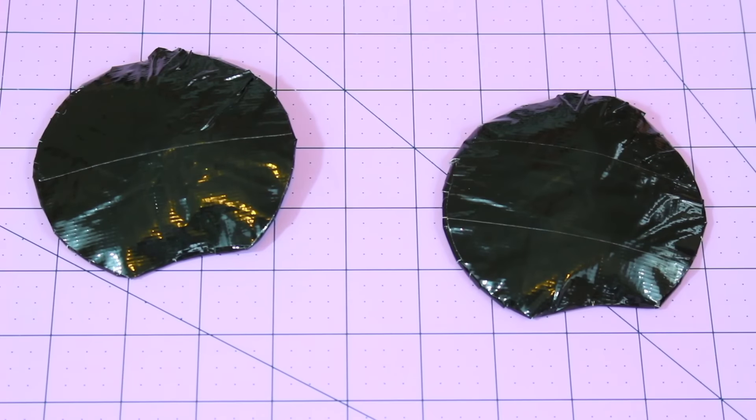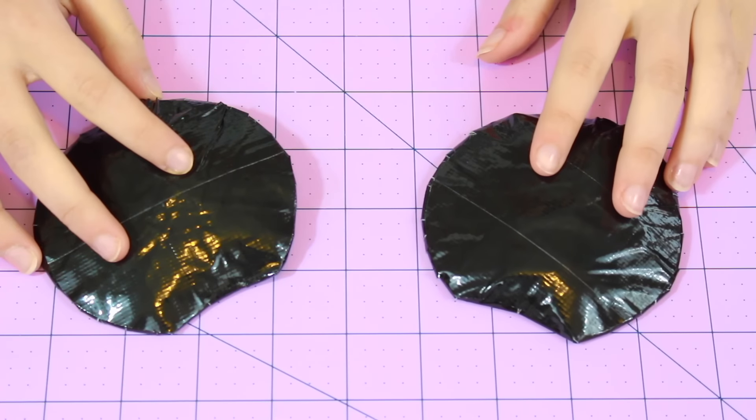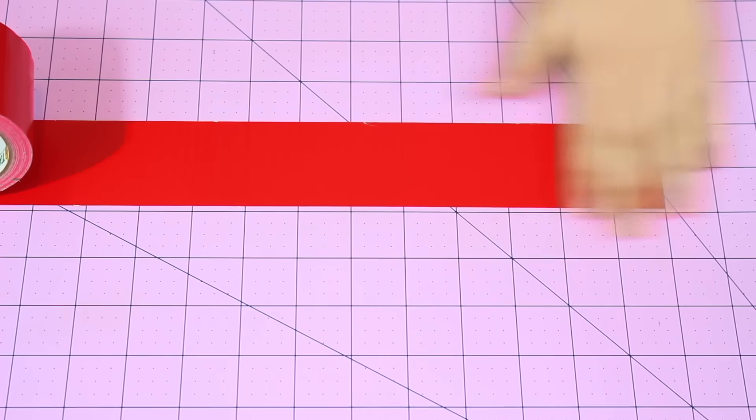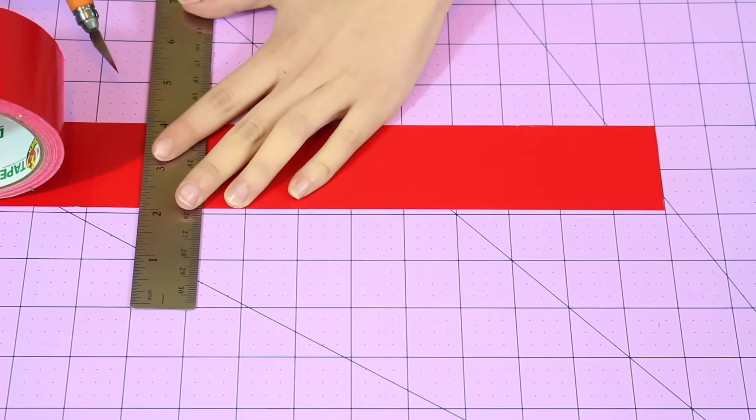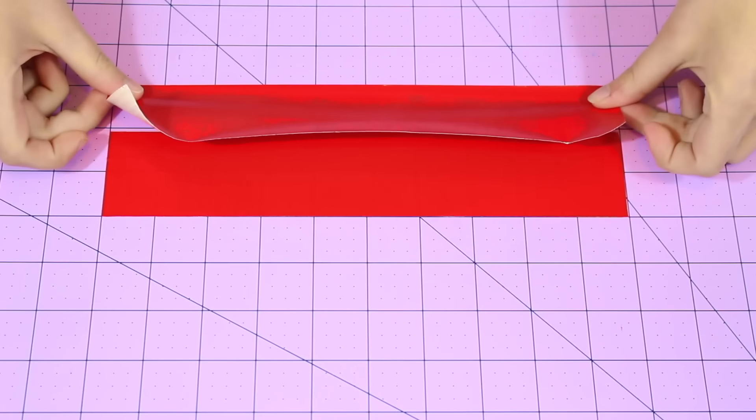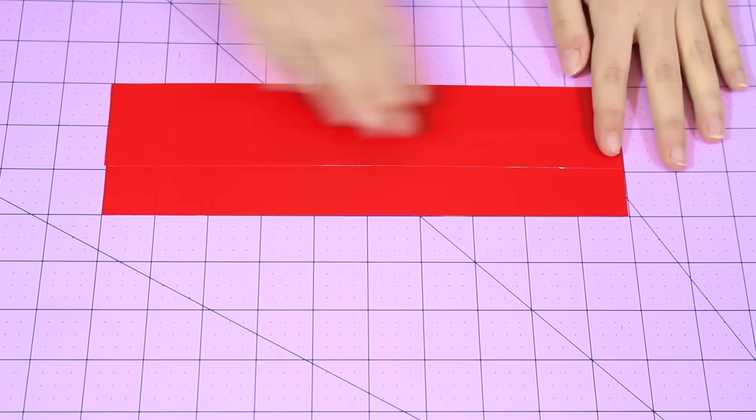Okay guys so now that you should have your two Minnie Mouse ears done we are going to get started on the Minnie Mouse bow. Okay so I'm just taking my red duct tape here and I'm going to make this strip 10 inches long and then I'm taking another piece, I'm putting that on top to make this sheet 3 inches tall.